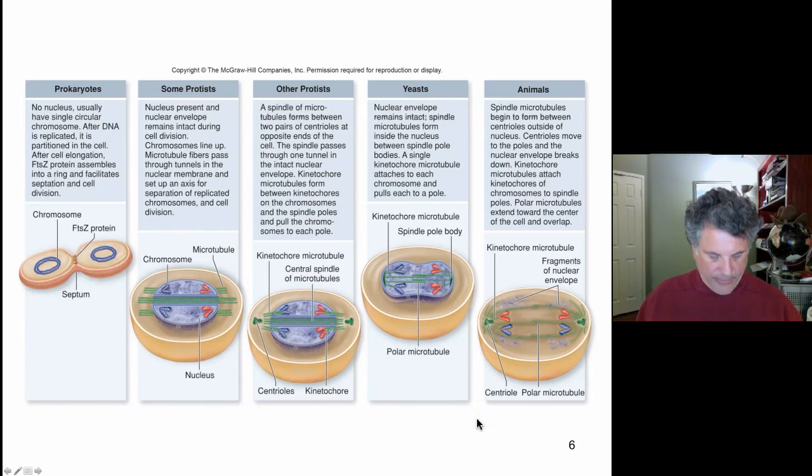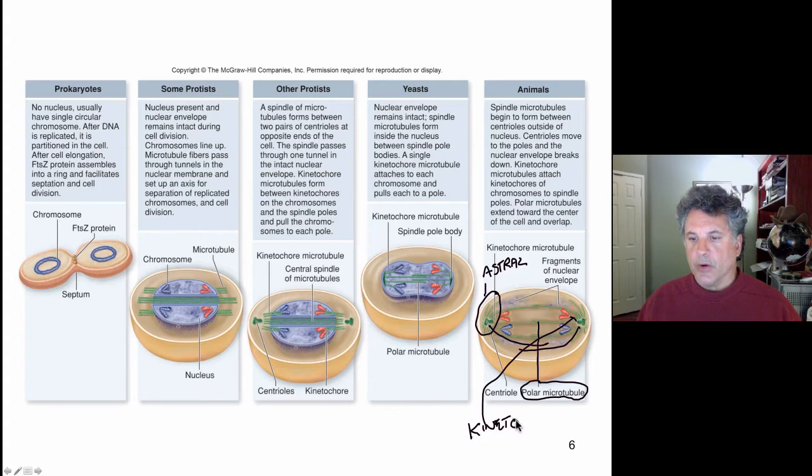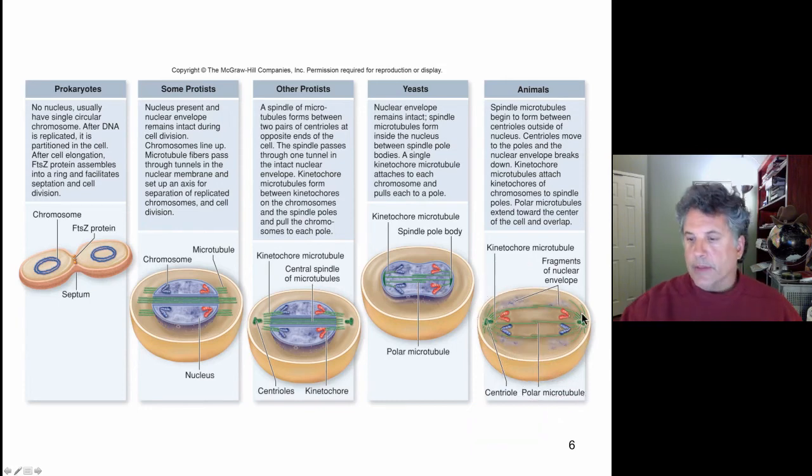In animal cells, we have three types of microtubules. We have the astral microtubules—aster means star in Greek—so astral microtubules. We have the polar microtubules, which extend end to end and can overlap in the center of the cell. And then we have the kinetochore microtubules. These three types of microtubules are organized by the centrioles in animal cells and form the spindle apparatus responsible for partitioning the chromosomes.